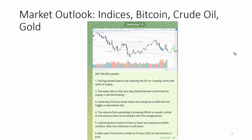For the market outlook, I just shared it in my Telegram group that there's a market update on the 16th. Generally it started from this bar — this is the CPI bar. This is the bar reacting to the CPI and it's super bearish, a very big spread bearish bar. It comes with a spike of supply, and subsequently there is just a very weak rally. The next day is just a weak rally, confirming supply is still dominating.